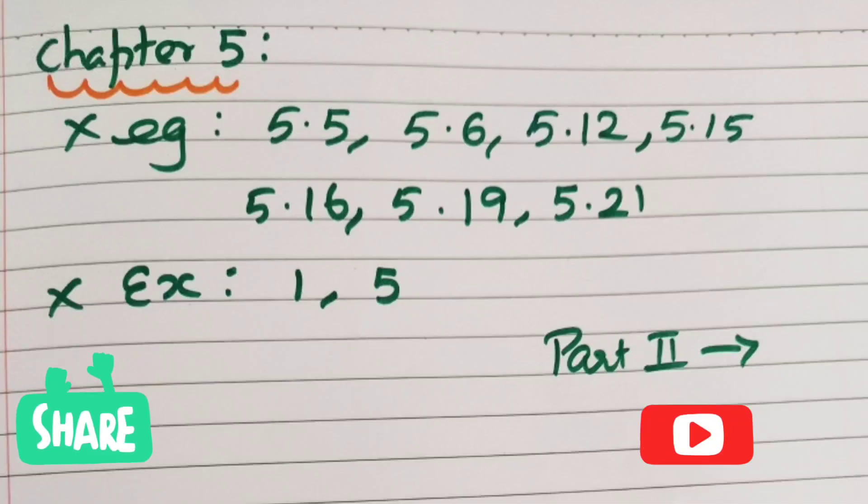In Chapter 5, there are 5.5, 5.6, 5.12, 5.15, 5.16, 5.19, 5.21.